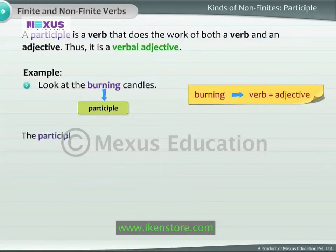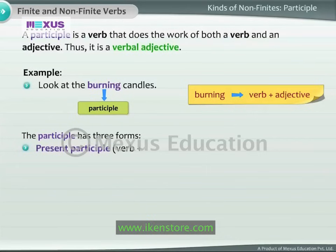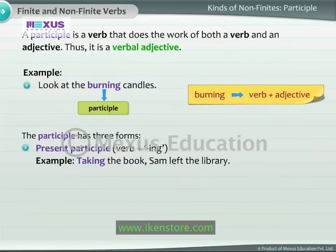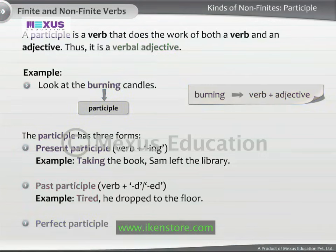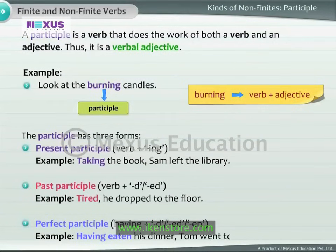The participle has three forms. The present participle consists of the verb plus '-ing.' For example, 'Taking the book, Sam left the library.' The past participle consists of the verb plus '-d' or '-ed.' For example, 'Tired, he dropped to the floor.' The perfect participle consists of 'having' plus '-d,' '-ed,' or '-en.' For example, 'Having eaten his dinner, Tom went to sleep.'